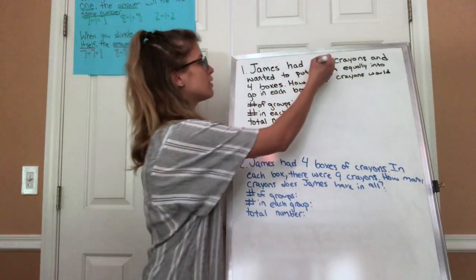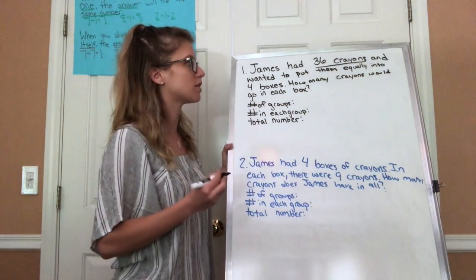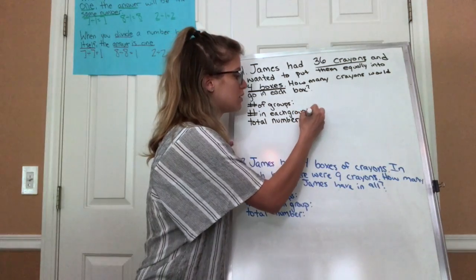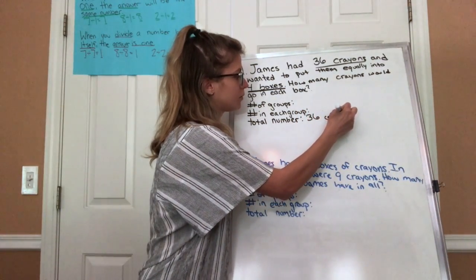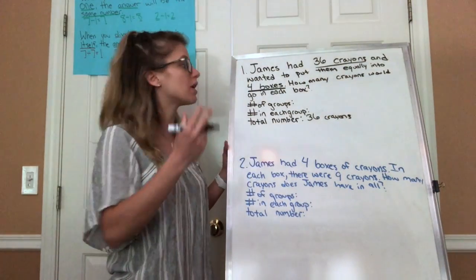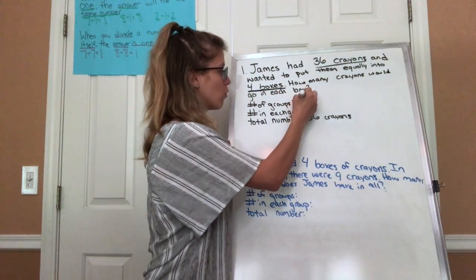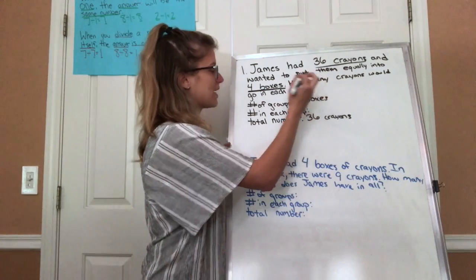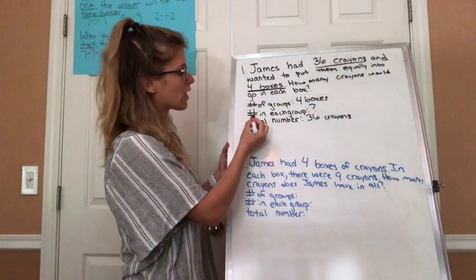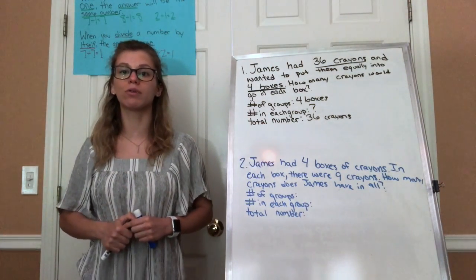It says that James had 36 crayons and wanted to put them equally into four boxes. So 36 crayons is my total number — I'm not getting any more, but I'm splitting it up into four boxes. The number of groups would be four boxes, and it's asking us how many crayons go in each box, so we're trying to figure out how many in each group. Pause and think about an equation that can represent this problem.